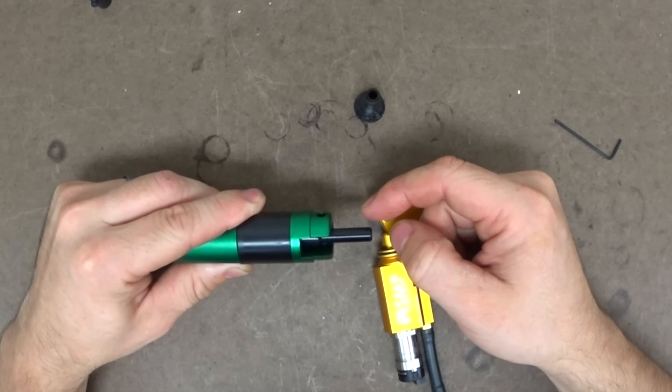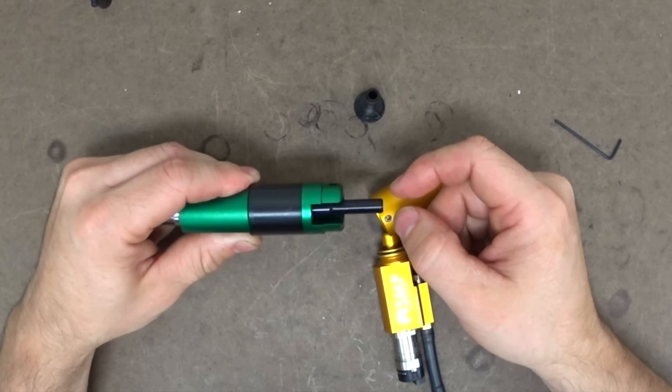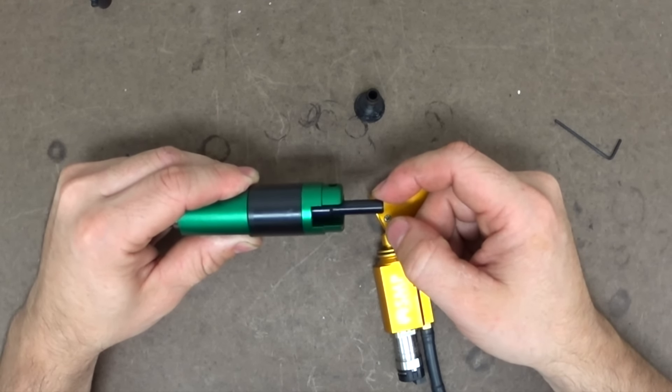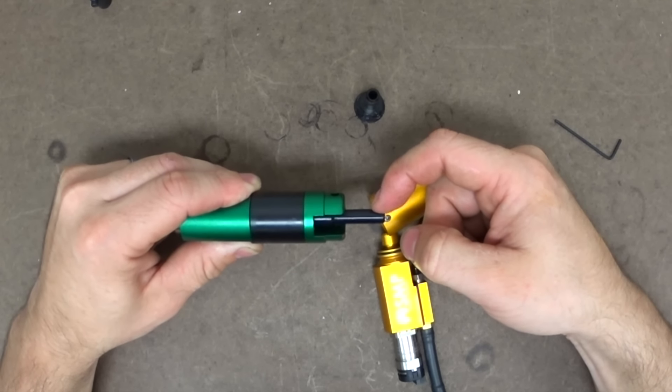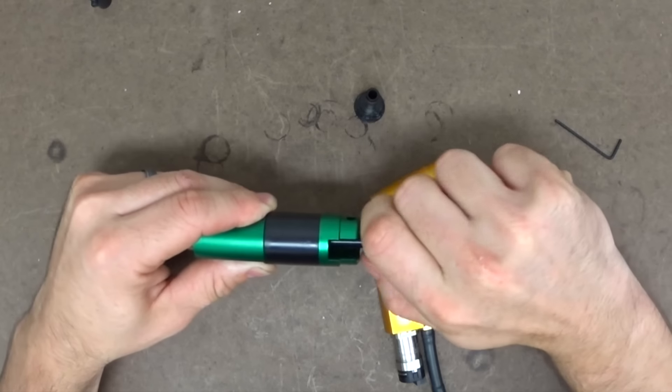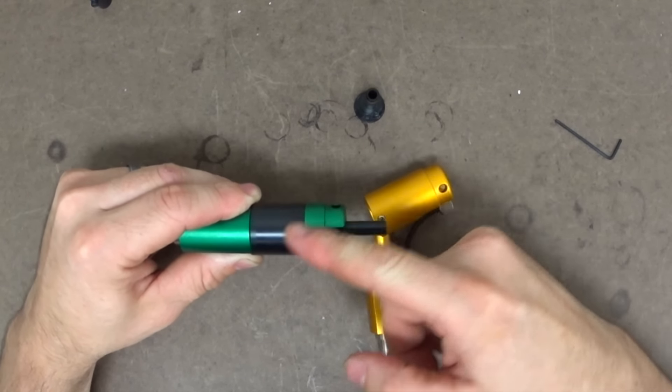Traditionally, what has sometimes caused problems is if the system is not installed correctly in the gun and the nozzle is running into the hop-up unit, it puts side pressure on the nozzle. And when you do that, as the nozzle cycles back and forth, it can cause the nozzle to scratch because you're rubbing up against the aluminum housing.